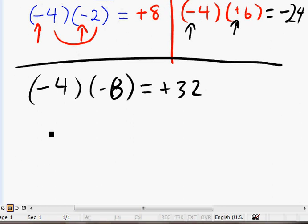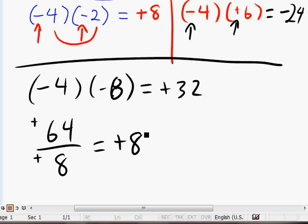Let's jump down to division. What about 64 divided by 8? Well, if you don't put a sign, you know it's a positive, so there's a positive 64, positive 8. Because they're the same signs, the answer is going to be a positive answer. 64 divided by 8 is 8, and that's your answer.